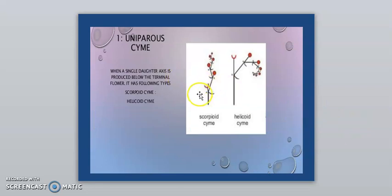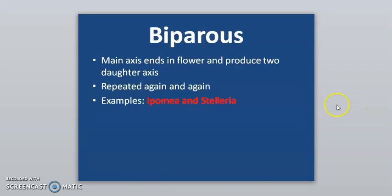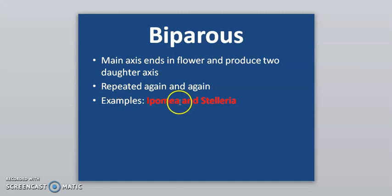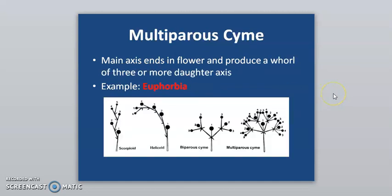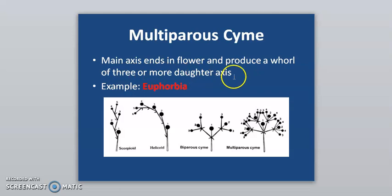This diagram shows the uniparous cyme — scorpioid cyme and helicoid cyme. In biparous cyme, the main axis ends in a flower and produces two daughter axes, repeated again and again — example is Ipomoea and Silene. In multiparous cyme, the main axis ends in a flower and produces a whorl of three or more daughter axes — example is Euphorbia.